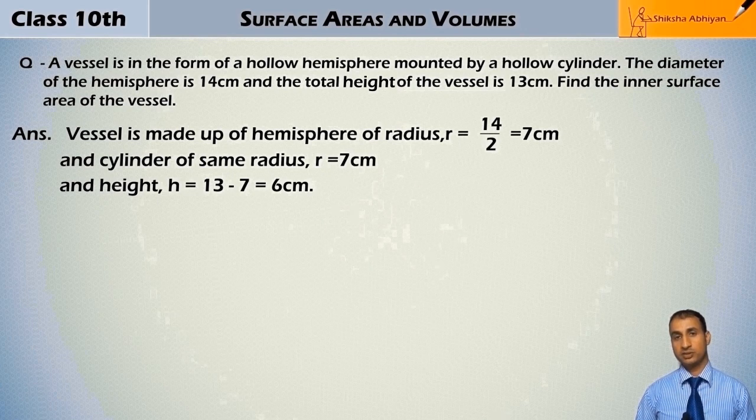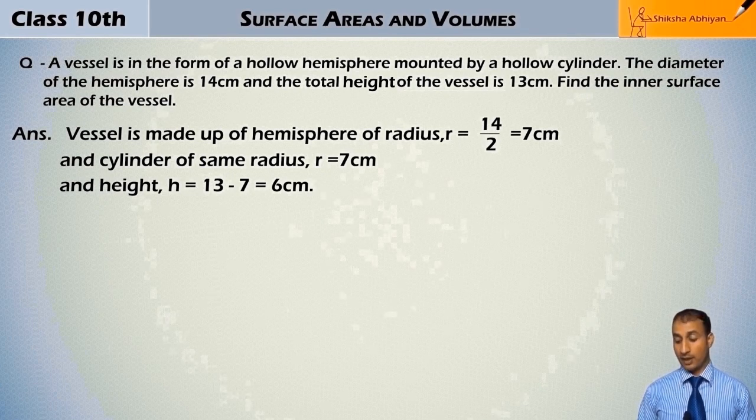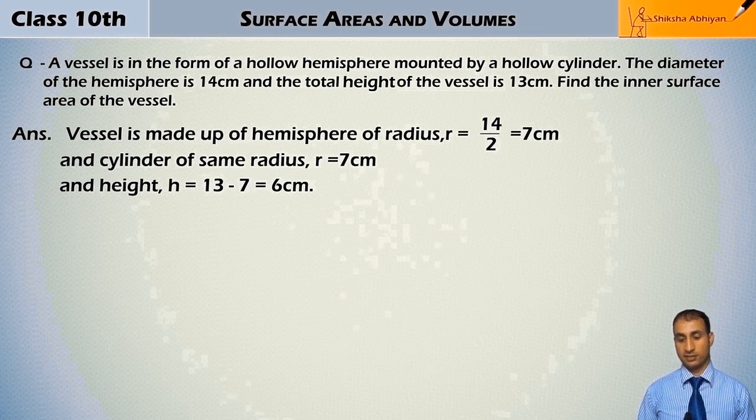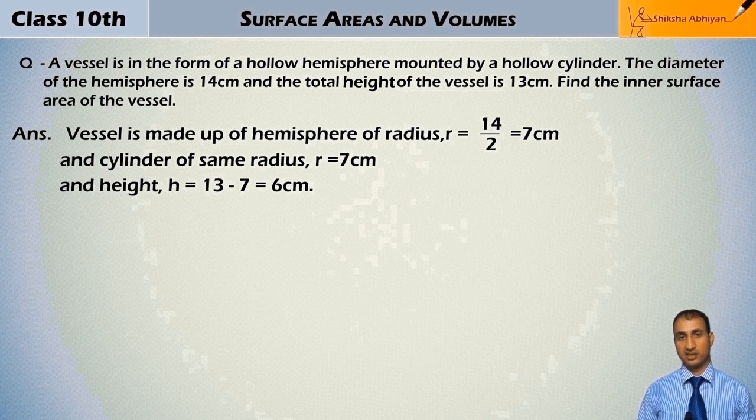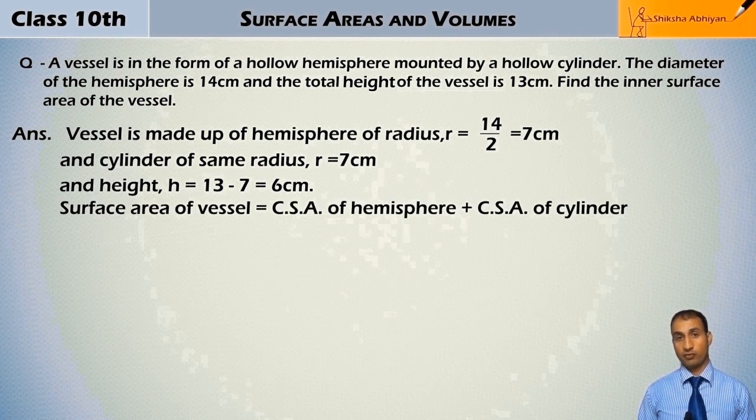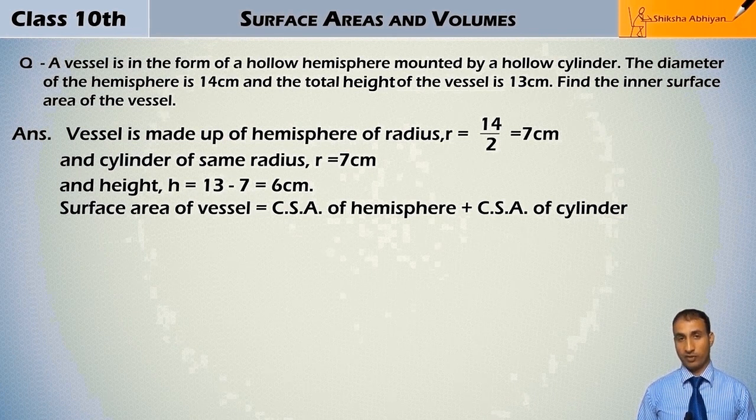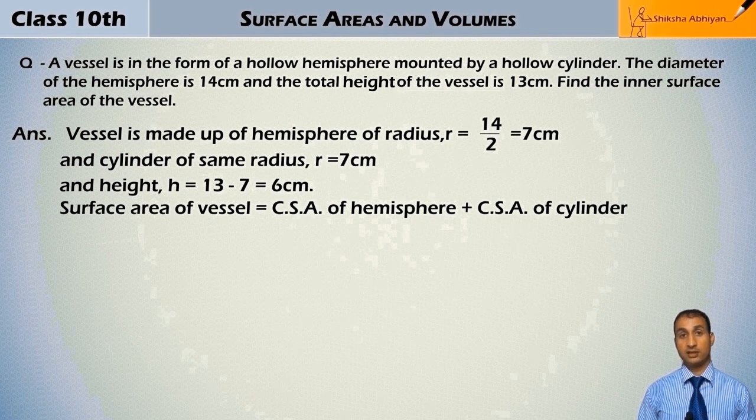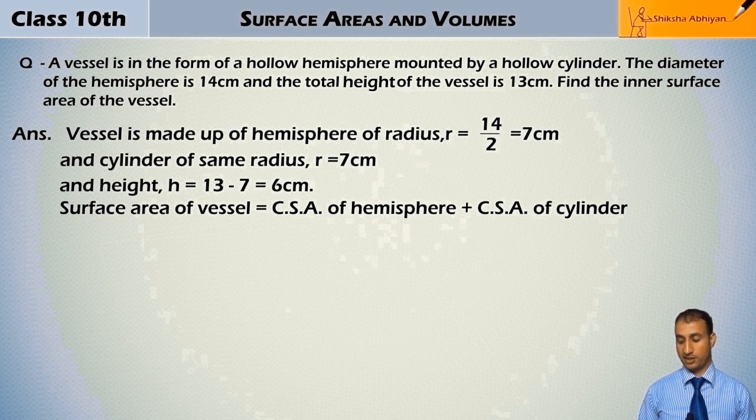So the vessel is made up of a hemisphere of radius r = 14/2 = 7 cm and a cylinder of same radius r = 7 cm. The height h = 13 - 7 = 6 cm. This height is for the cylinder. Now, surface area of vessel is curved surface area of hemisphere plus curved surface area of cylinder.